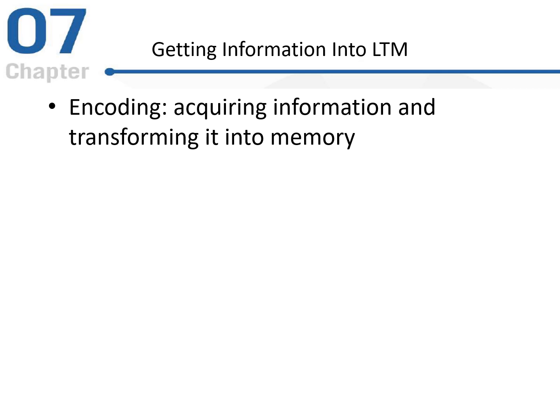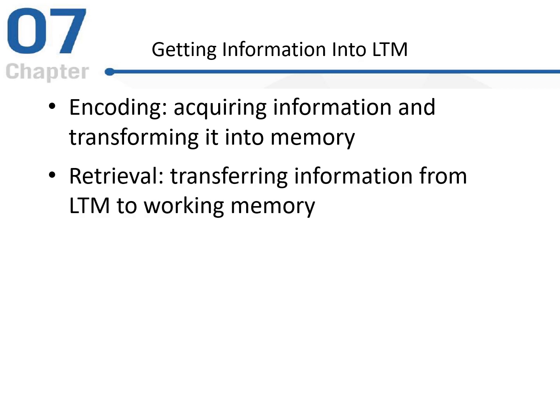Now we'll look at how we get information into long-term memory. The first thing we do is encode, and this is where we're acquiring information from the environment and we transform it into a memory. Now, later on, if we want to use this information, we have to retrieve it from long-term memory, and this is where we're actually transferring that information from long-term memory into working memory so we can use it in the present.